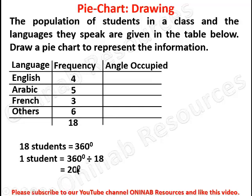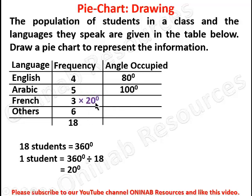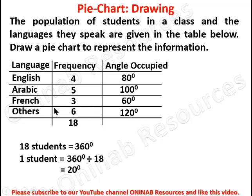Each student occupies 20 degrees in the pie chart. To get the total angle for English, we multiply by 20 to give 80 degrees. For Arabic, we multiply by 20 to give 100 degrees. For French, we multiply by 20 to give 60 degrees. And finally for Others, we multiply by 20 to give 120 degrees.